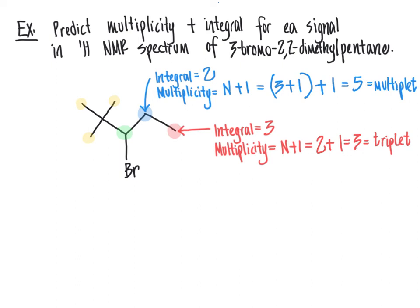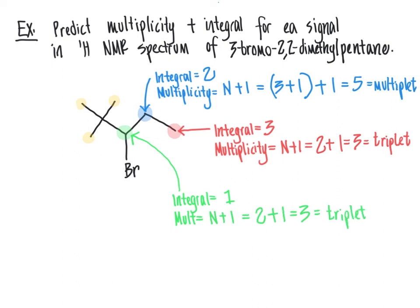Moving to the green CH hydrogen: the integral is one, because there is just one proton in that signal. For the multiplicity, we look to the adjacent carbons. To the left, there are no vicinal hydrogens contributed from the quaternary carbon. To the right, the CH2 group contributes two vicinal hydrogens. So N+1 = 2+1 = 3, which is a triplet.